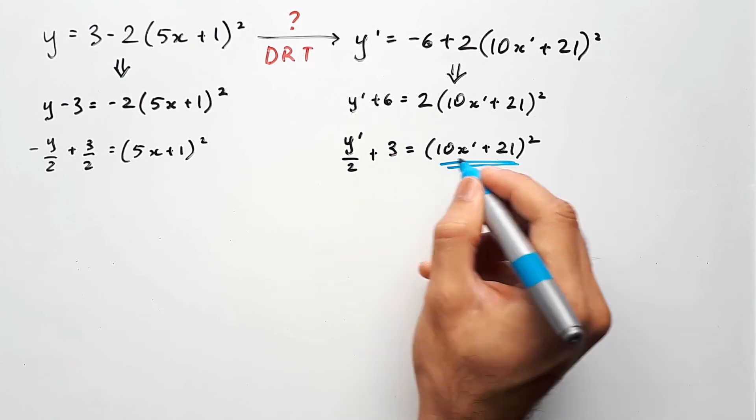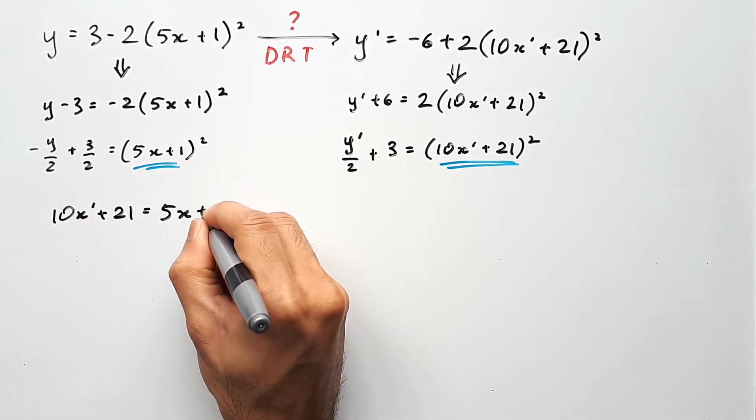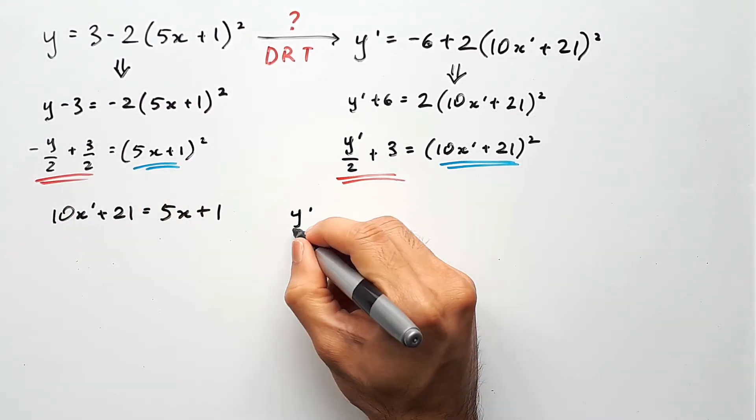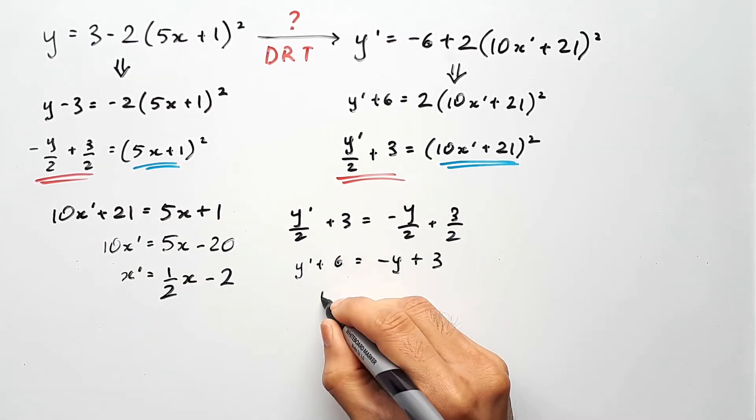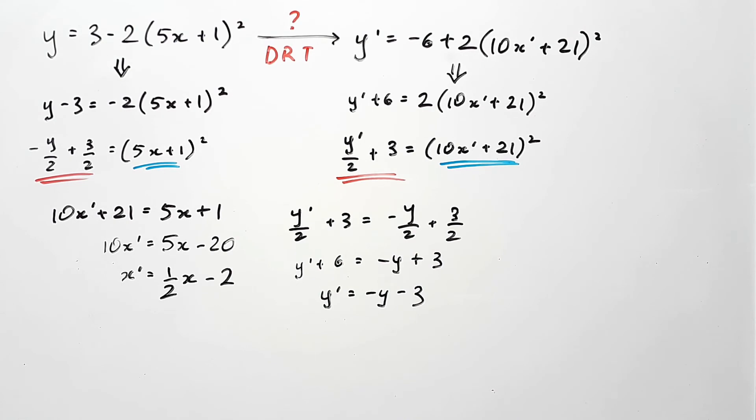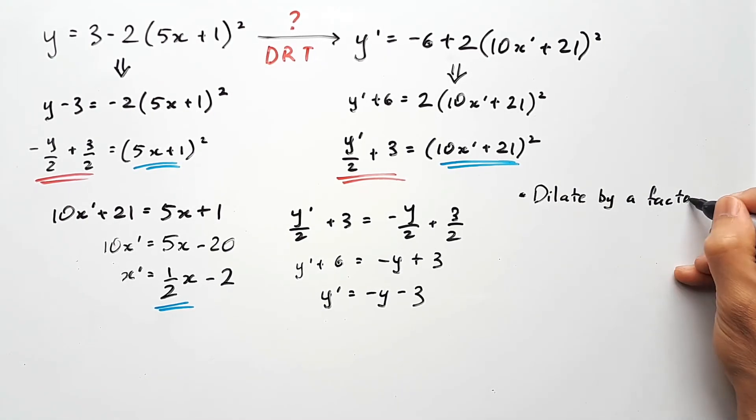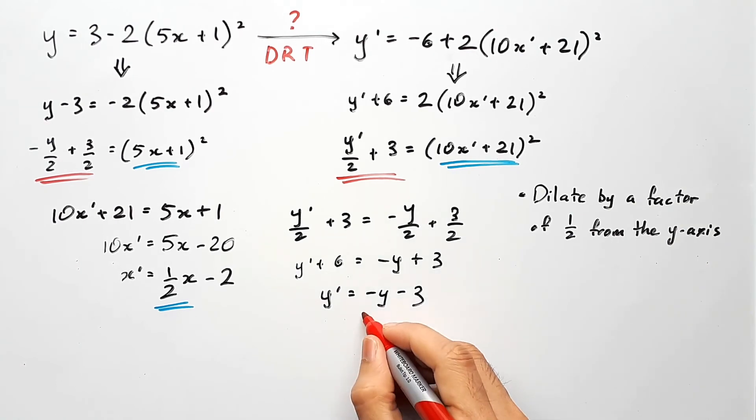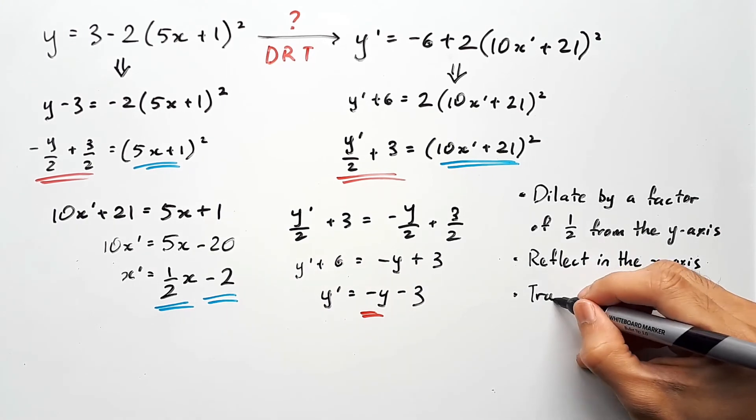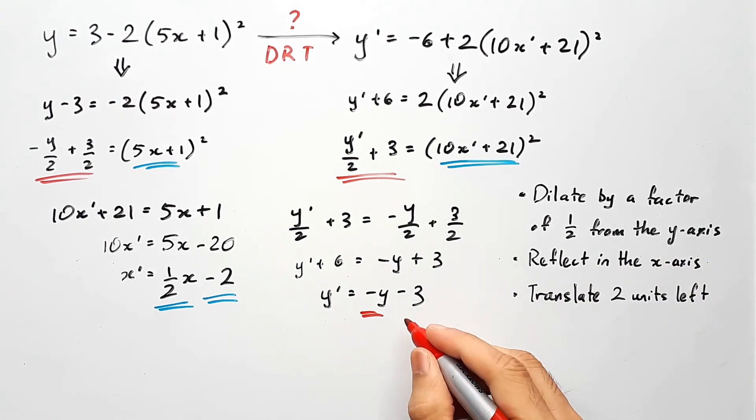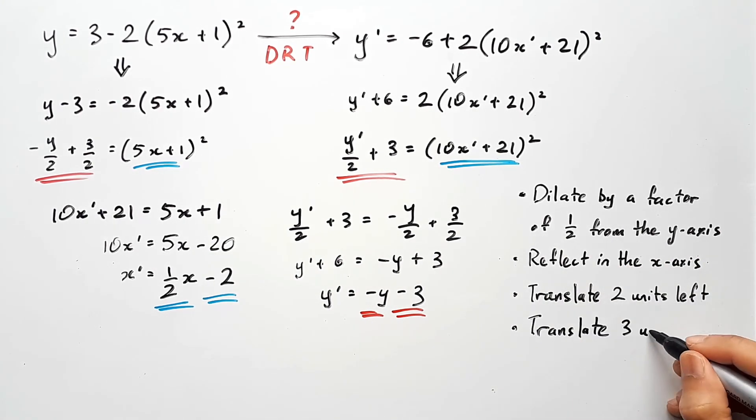So 10x dash plus 21 equals 5x plus 1, and y dash over 2 plus 3 equals to negative y over 2 plus 3 on 2. Rearrange these for x dash and y dash as the subjects, and we have our transformation equations. From here, interpret what they mean into their sequence by first addressing the dilations. The half on the x means dilate by a factor of half from the y axis. The negative on the y means reflect in the x axis. Minus 2 for the x means translate 2 units left. Minus 3 for y means translate 3 units down.